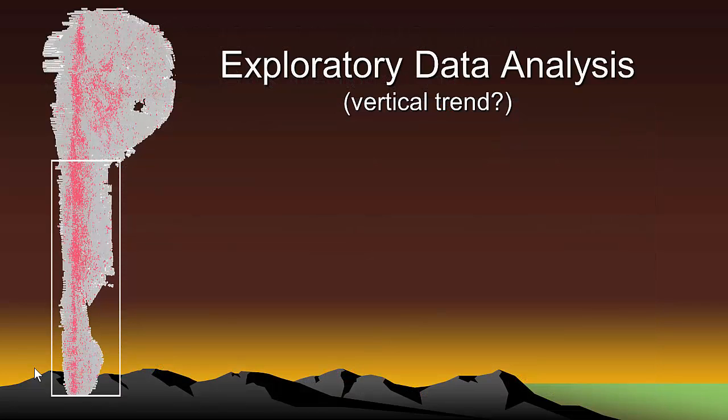Next, we explore the possibility of a dip angle. It is obvious from the six level maps that the vein system has a vertical extent. We might be able to determine the dip angle by carefully studying the six level maps and measuring horizontal offsets between levels. But there is a better way to check for a dip angle.